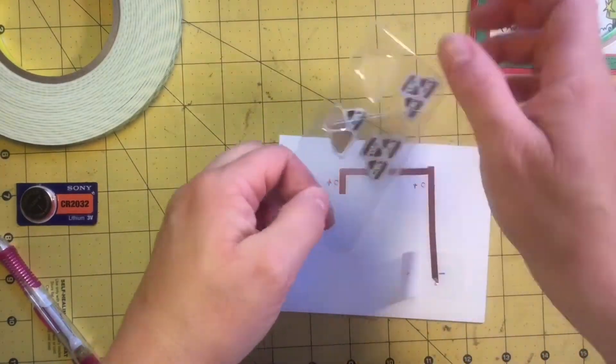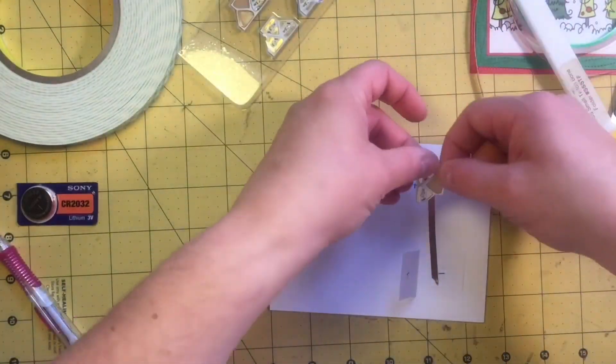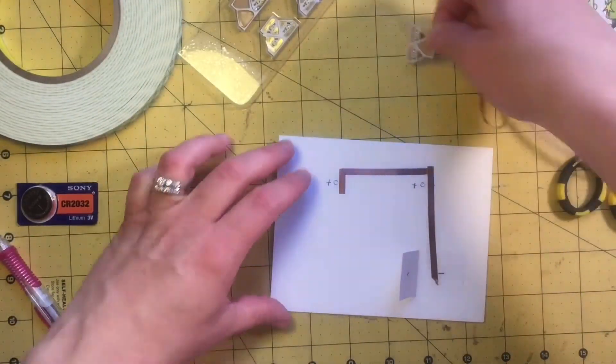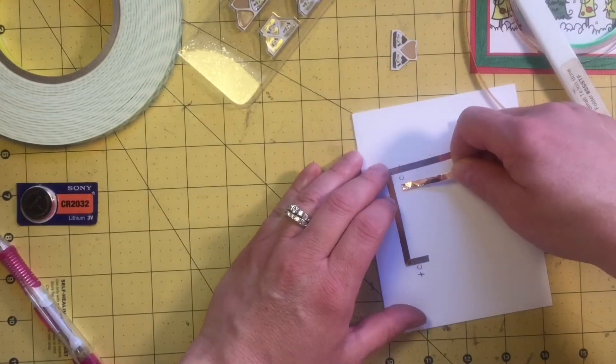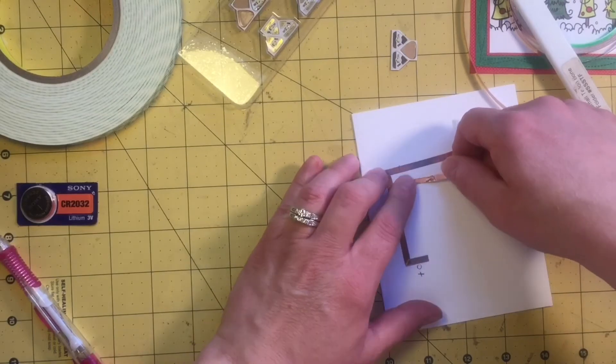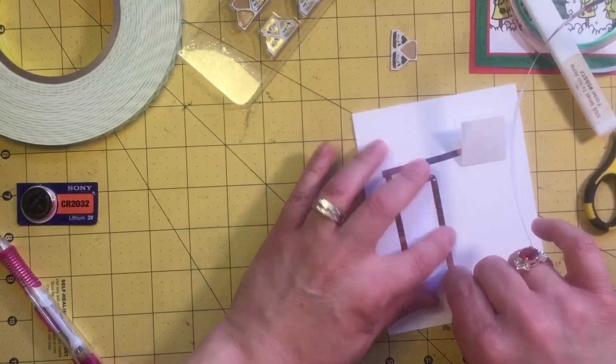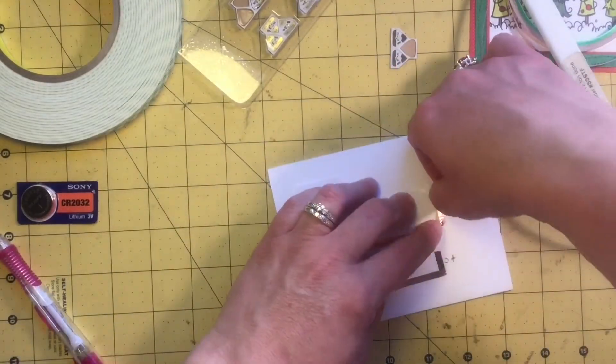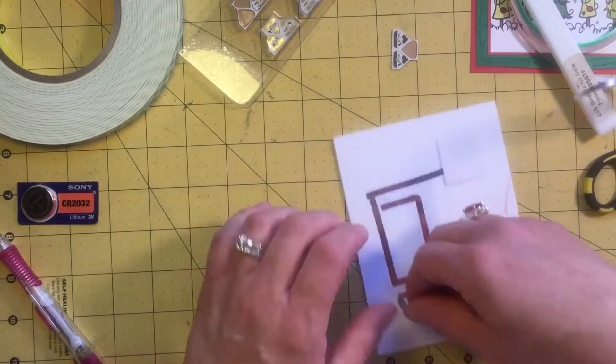Here I'm getting out a light just so I can determine how far away my positive needs to be. On each side of the light there's little copper conductors that help connect it. So you just need to make sure that your path is touching each side.